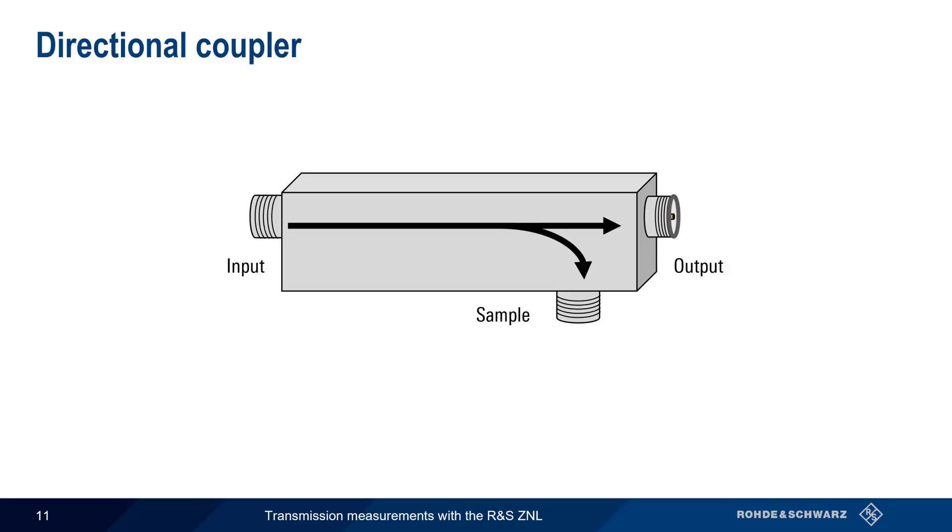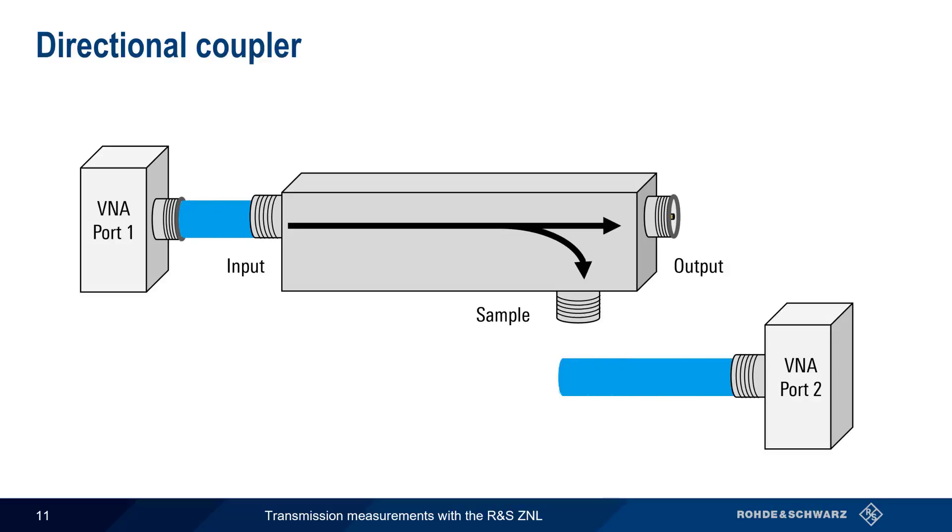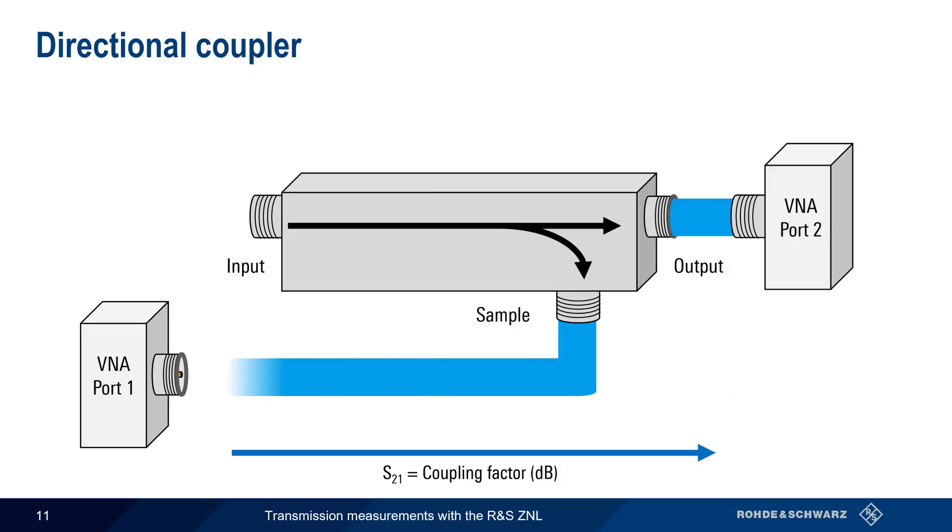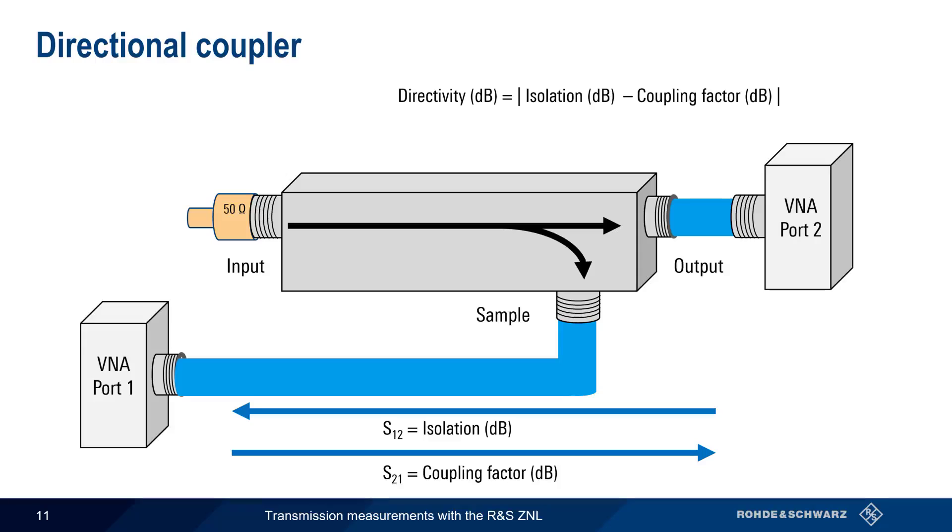In addition to passing power from the input to the output, some of the power is also routed to the sample port. We can verify and measure the function of this coupler in two steps. First, we stimulate the input port and measure at the sample port. This gives us the coupling factor. We then make another measurement, this time stimulating the output port and then measuring at the sample port. This is called the isolation. Directivity is then calculated by the difference between the coupling coefficient and the isolation value. Note that in both steps we've terminated the unused port. This is good practice whenever using a VNA.